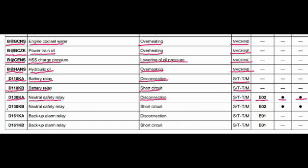Code D130KB: the part is the neutral safety relay and the problem is short circuit. Controller is the steering and transmission controller. Action code E02. Lamp will blink and buzzer will beep.